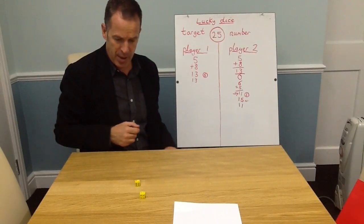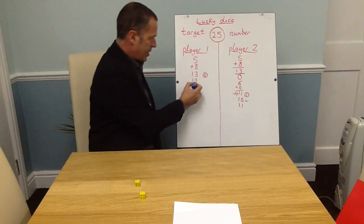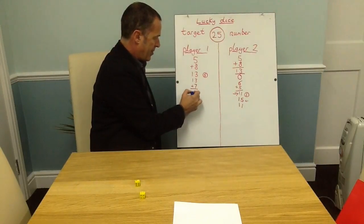Player one's turn. Five and two is seven. So I'm on thirteen, I add seven. That makes twenty.